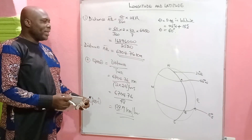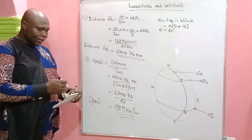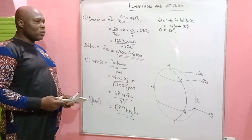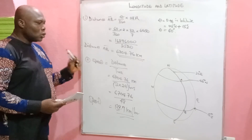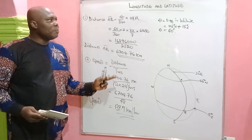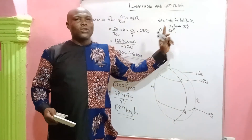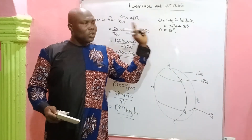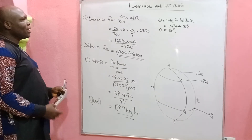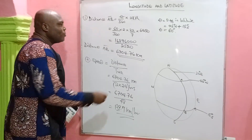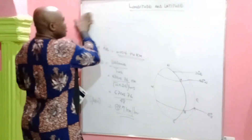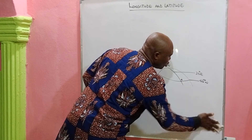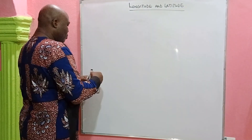That is how we compute distances along the great circles. The only difference is: if both towns are north-north or south-south, you subtract their latitudes to get theta. But if one is north and the other is south, you add. We will now go straight to distances along the small circles, and after that we will learn how to compute the total length of a journey when a question combines both.